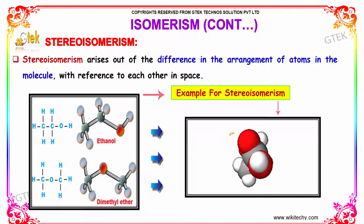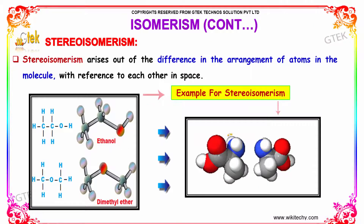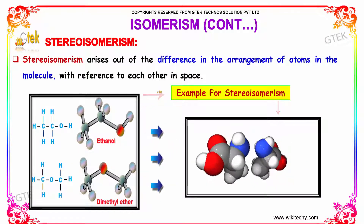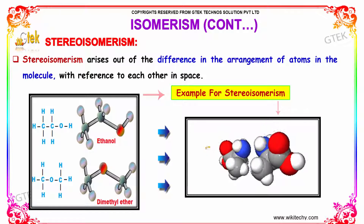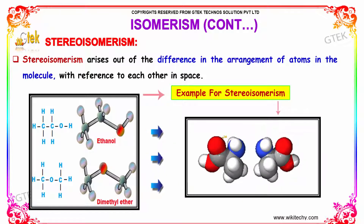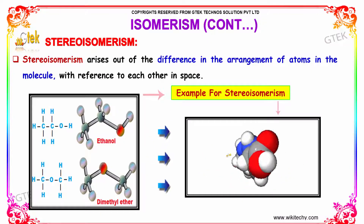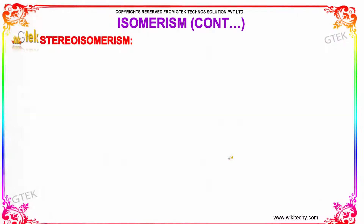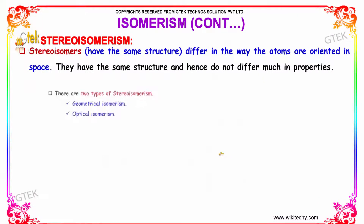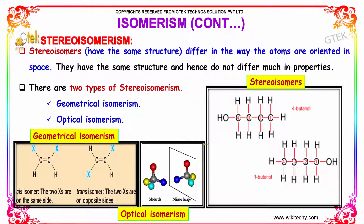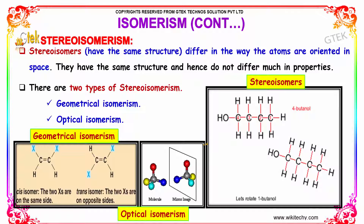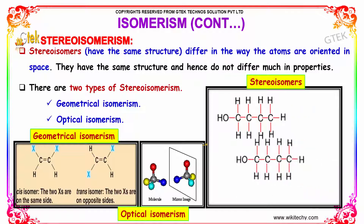Stereoisomerism arises out of the difference in the arrangement of atoms in the molecule with respect to each other in space. This is a three-dimensional structure of Stereoisomerism. Stereoisomers differ in the way the atoms are oriented in space. They have the same structure and hence do not differ much in properties.